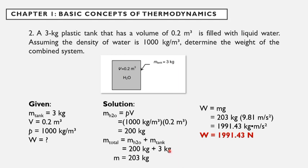Since we already have the total mass, we can solve now the weight of the system. By using the equation, weight is equal to mass times gravity. So 203 kg times 9.81 m per second squared is equal to 1,991.83 kg times m per second squared, or the weight of the system is equal to 1,991.43 N.